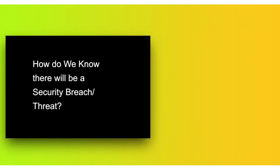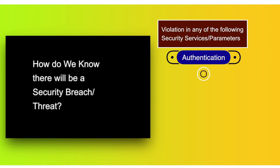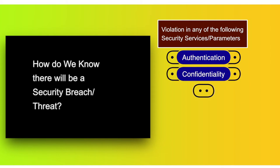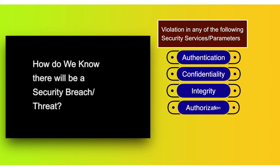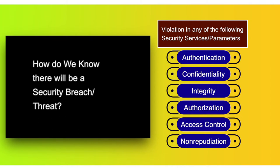That is why it is a very challenging task to know whether there will be a security breach or not. Violation in any of the following six security parameters leads to a security breach: authentication, confidentiality, integrity, authorization, access control, and non-repudiation. We call these the six critical parameters for the successful functioning of an IT system in a networked environment.